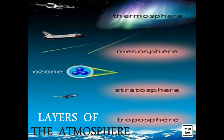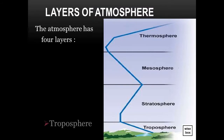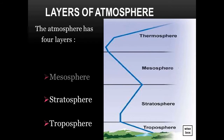The layers of the atmosphere. The atmosphere has four main layers, namely: Troposphere, Stratosphere, Mesosphere, and Thermosphere.